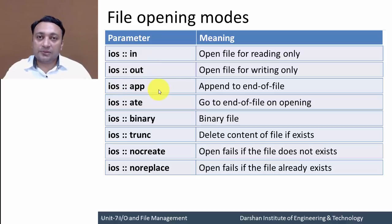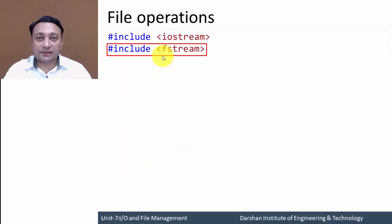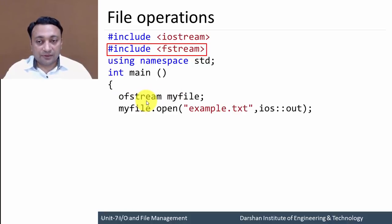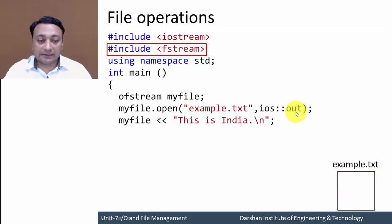Let us discuss a few file opening modes using an example. In the program I am using the fstream class, so I am including fstream at the beginning. Next, I am creating an object myfile of class ofstream. Using that object I am opening a file in writing mode — this statement creates example.txt for writing.